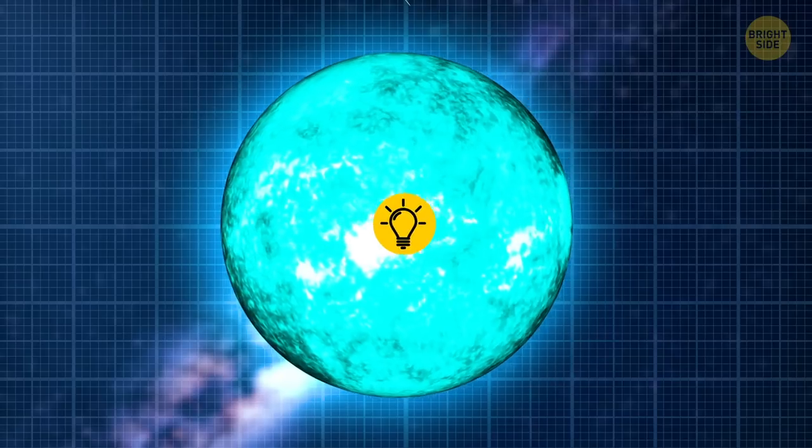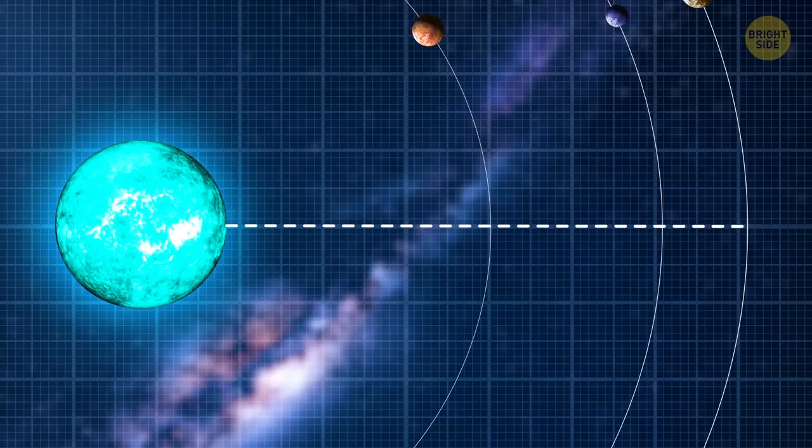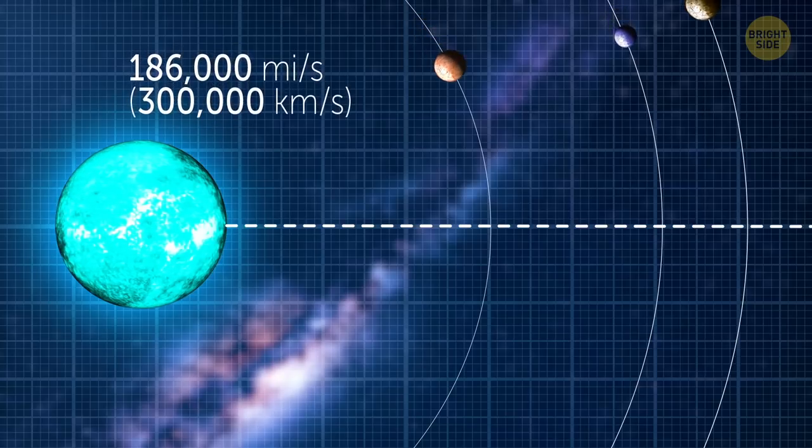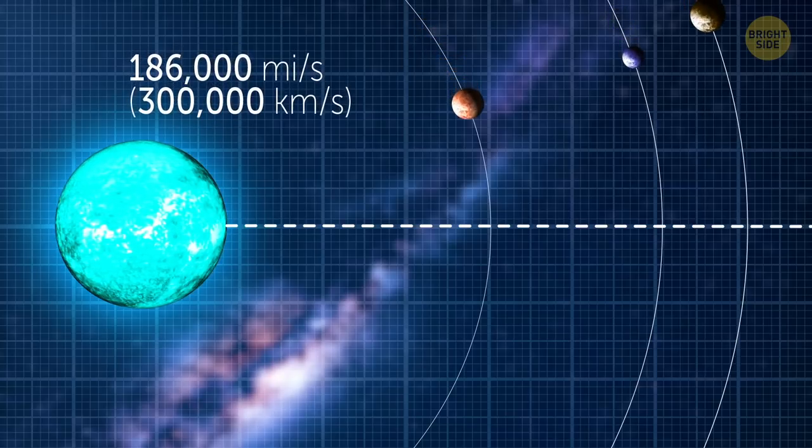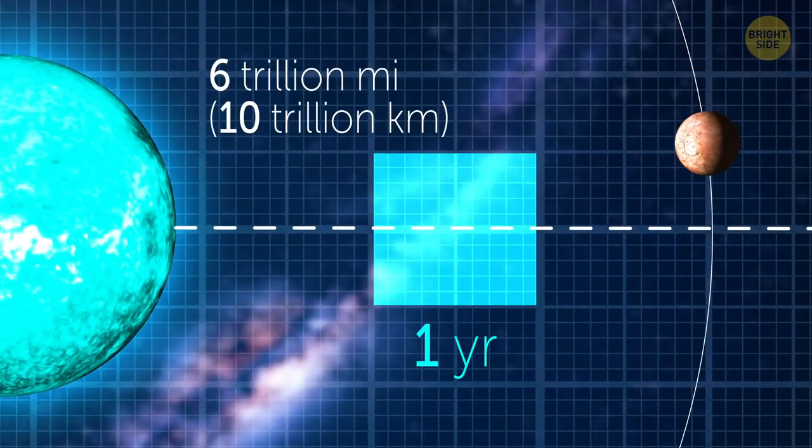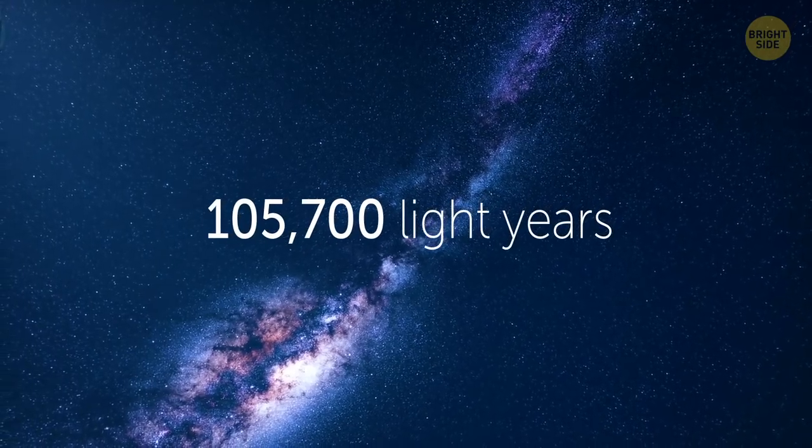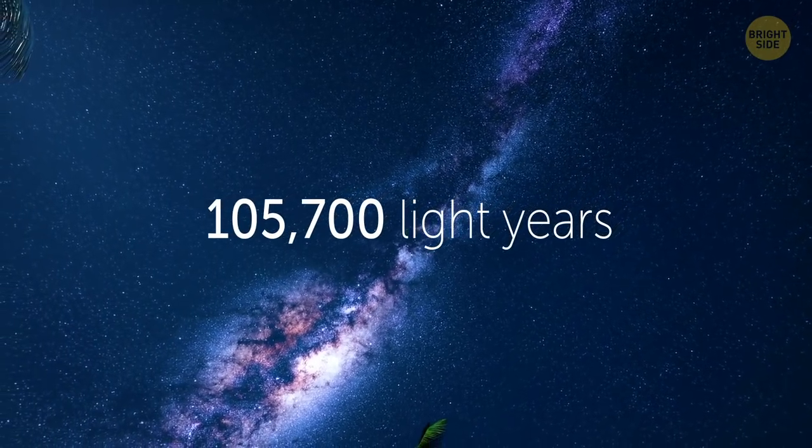A light year is the unit of distance covered by light in a single year. Light moves a little more than 186,000 miles per second, so one light year is almost 6 trillion miles. Which reminds me, our Milky Way is 105,700 light years wide.